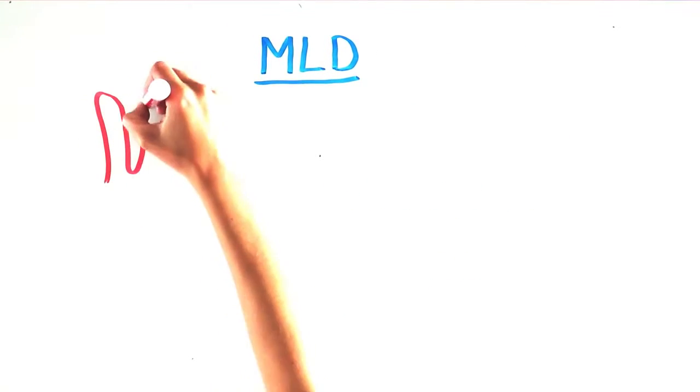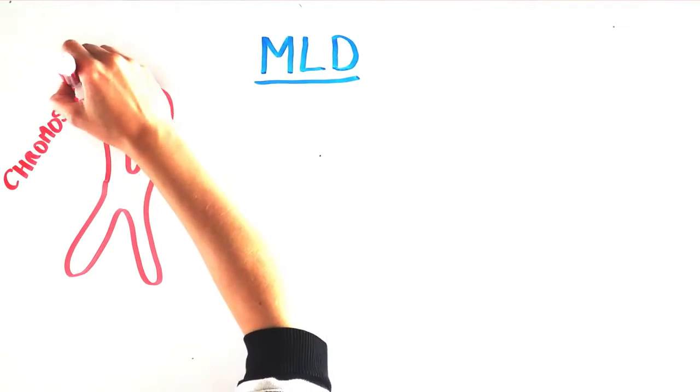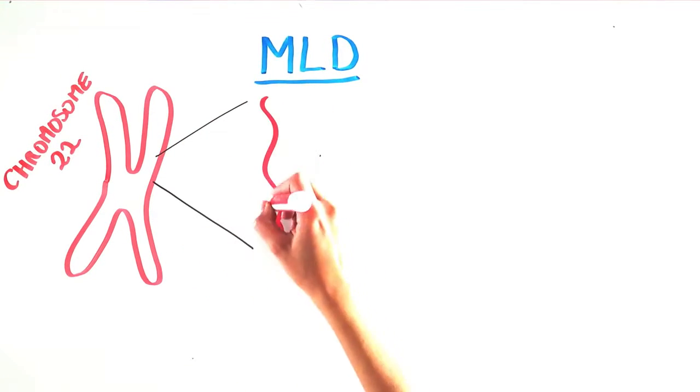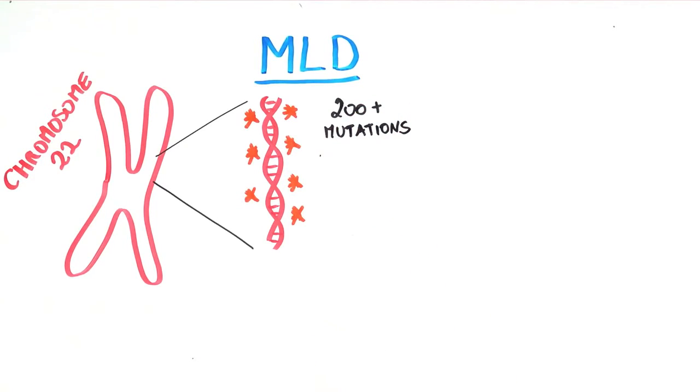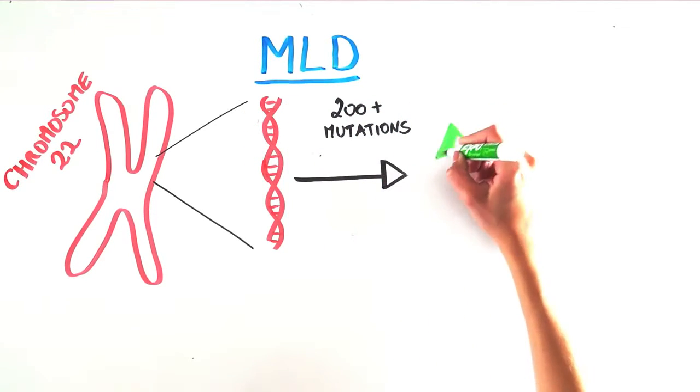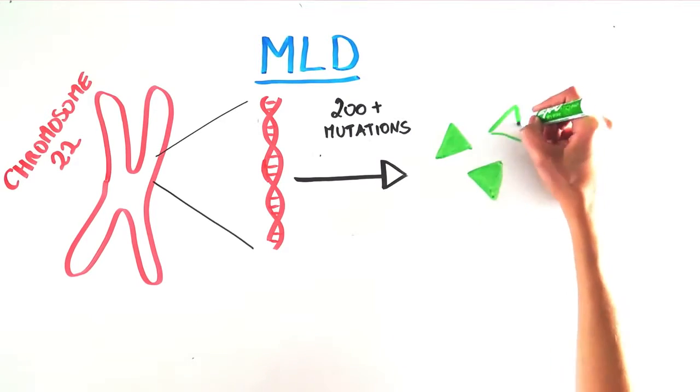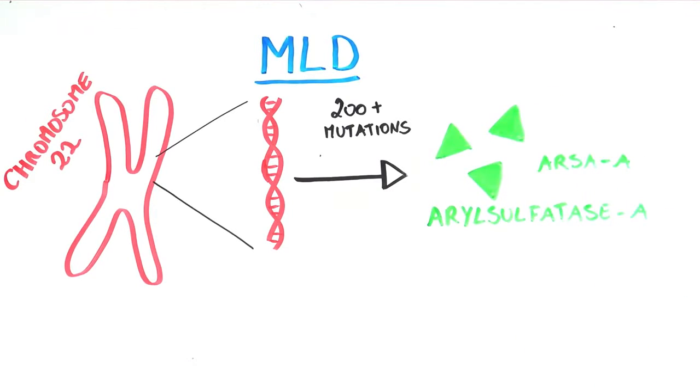Let's delve into the biology behind MLD. It is caused by a mutation, or a change in the DNA sequence, on chromosome 22. There are over 200 different mutations that can cause MLD. The gene mutated is responsible for making an enzyme called arylsulfatase A, abbreviated ARSA-A.